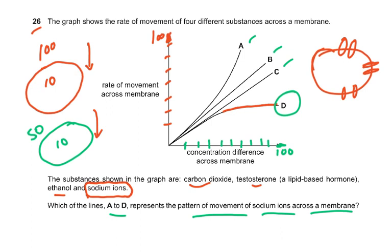Lipid passes through the phospholipid — the hydrophobic part allows ethanol, which is an organic solvent, to pass through the phospholipid bilayer. Testosterone is lipid-based, so it will pass through the phospholipid bilayer. Carbon dioxide is a small molecule and will pass through by simple diffusion. So the higher the concentration gradient, the more the rate of diffusion — that is why A, B, and C are increasing, but D has leveled off because channel proteins become the limiting factor. Please remember: think carefully, and only if you know the syllabus can you think correctly.